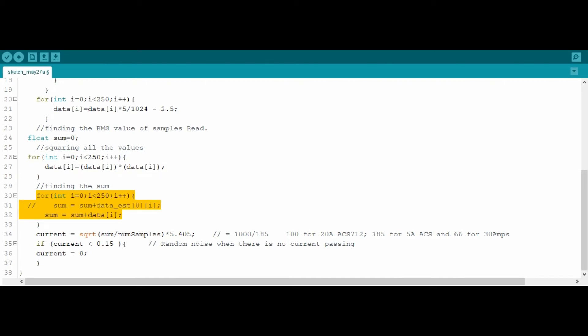Here at the end you see the line if current is less than 0.15. This is the noise of current sensor. This number might vary for the sensor you are using.